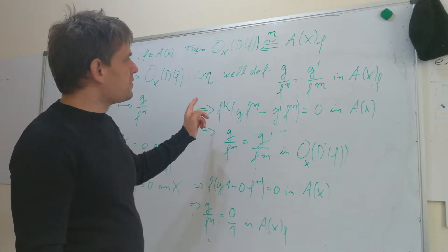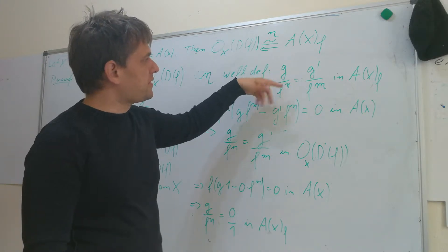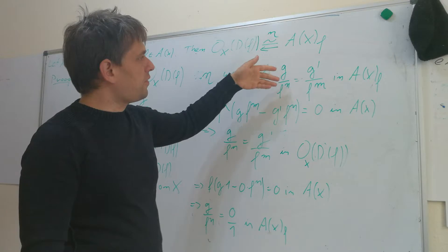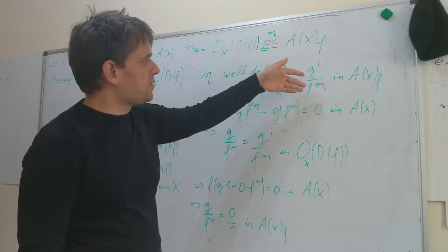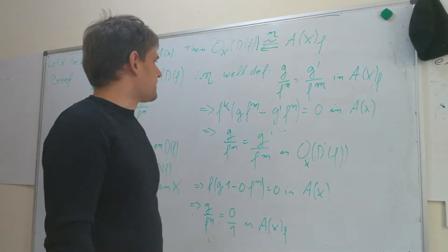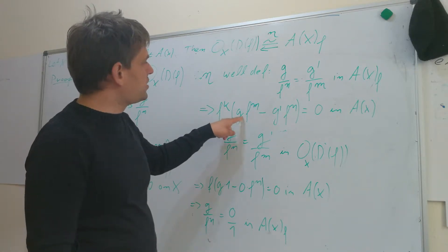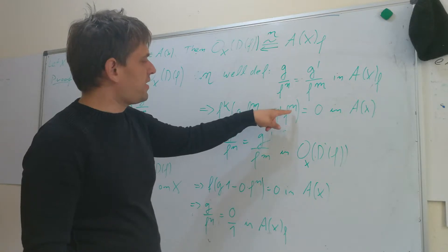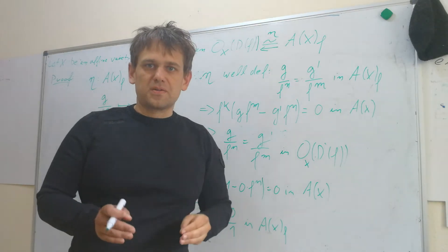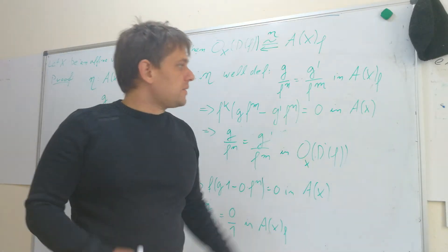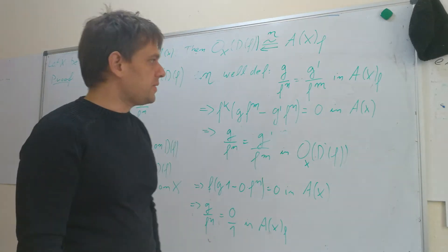Remember what it means for two elements to be representatives of the same equivalence class in Ax localized at f. It means that there is a k such that f^k times (g·f^m - g̅·f^n) is equal to zero. This is how this equivalence on this localization was defined. This is an equation in the coordinate ring Ax.